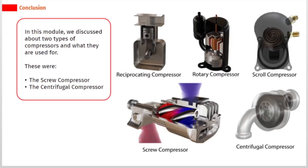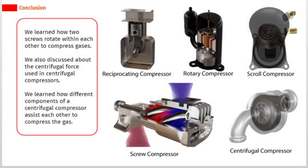In this module, we discussed two types of compressors and what they are used for: the screw compressor and the centrifugal compressor. We learned how two screws rotate within each other to compress gases. We also discussed the centrifugal force used in centrifugal compressors and how the different components work together to compress the gas.